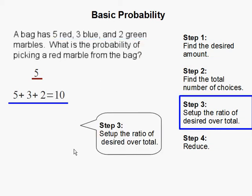Step 3: Set up the ratio of desired over total. Because probability is the amount you are looking for over the total amount. And there are 5 red marbles, and that is what they are looking for, over the total amount which is 10.